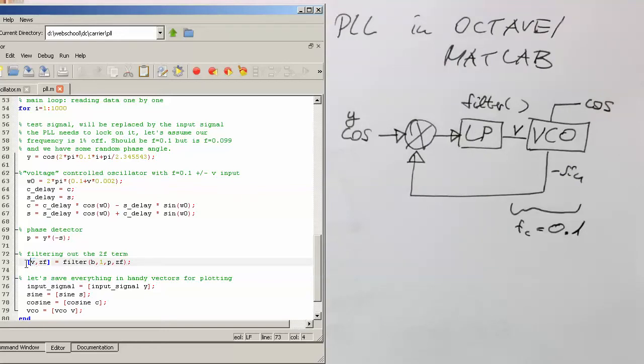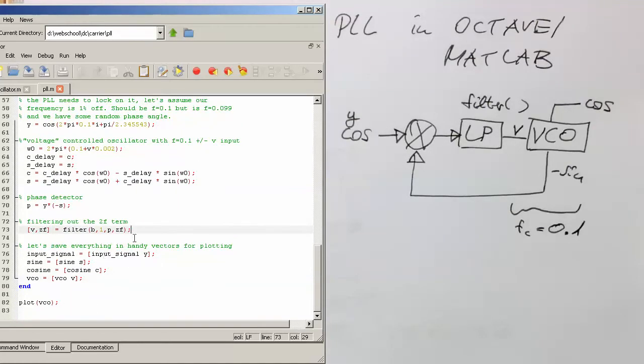So one tiny aspect here. So we see that the filter has this ZF here as a second argument. And this is the state of the filter. Of course, now we are running in a big loop. So we are processing the values one by one. And the filter needs to remember its previous state. And so that's important to remember here for the implementation.